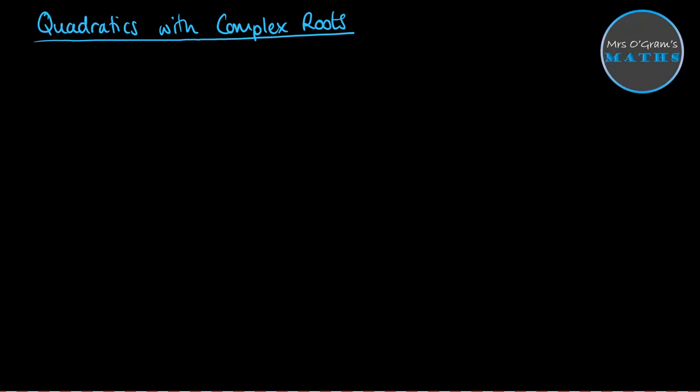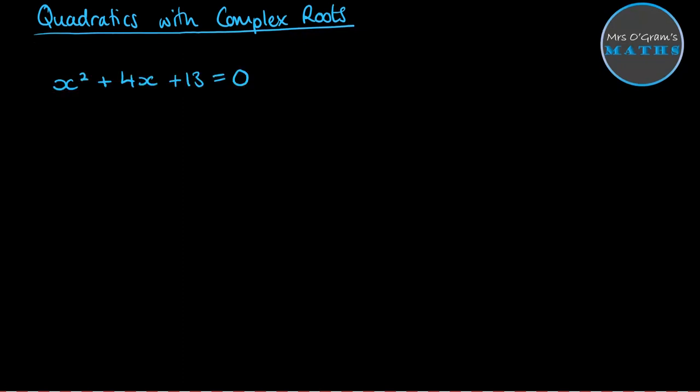Well, once you've found that the roots could be complex, we can actually go on and use i to help us find those complex roots. Let's take a look at this example. We've got x squared plus 4x plus 13 equals 0. And if you were asked to solve this, your first thought would be to look for factors. And then when you can see that it doesn't factorize, you would go ahead and do either completing the square or the quadratic formula. Most people go straight for the quadratic formula, so that's what I'm going to go ahead and do now.